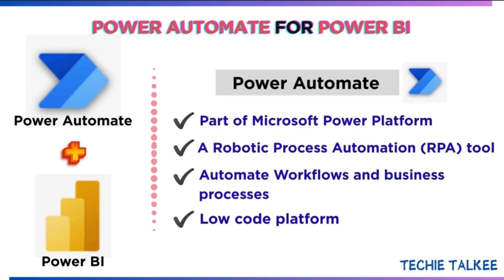Before getting into the demo, let me give you a brief overview of Power Automate. Power Automate and Power BI are part of Microsoft Power Platform. Power Automate in particular is an RPA tool, which stands for Robotic Process Automation, and it helps us automate workflows and business processes. It is a low-code platform — just a simple drag-and-drop mechanism or some configuration is needed to automate repetitive tasks.